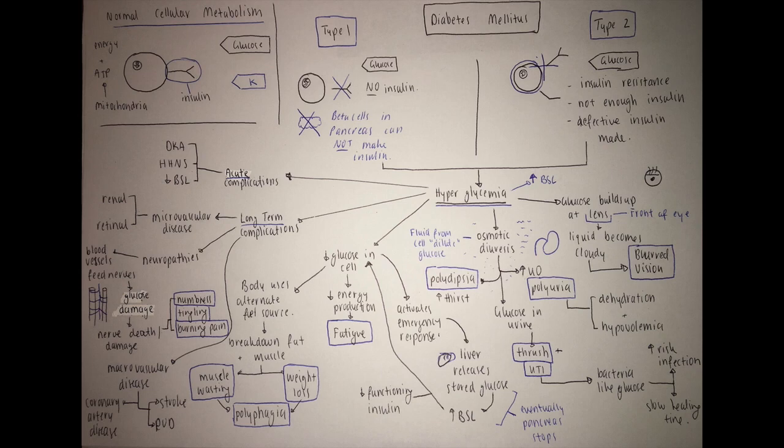Another thing that happens with hyperglycemia is there's no glucose in the cell, or not enough glucose in the cell. Glucose is one of our main sources of energy production. So you're going to feel like crap. You're going to be fatigued, tired, and exercise intolerant.